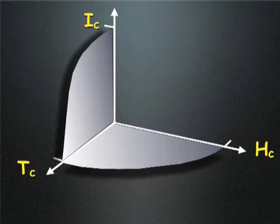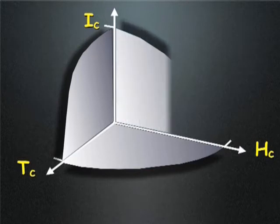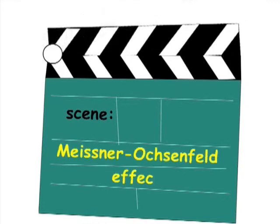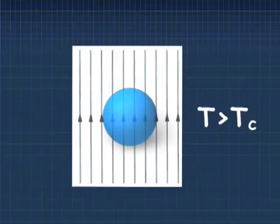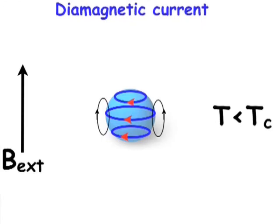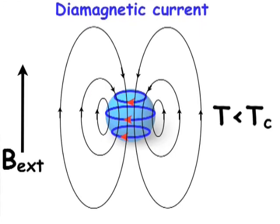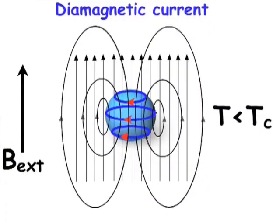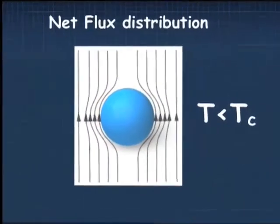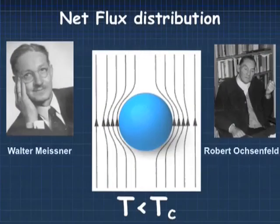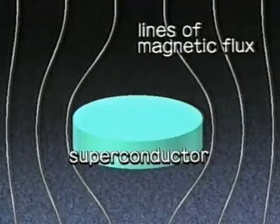In order to understand what controls current density, we really have to start with the basic phenomenology of the superconductor. The very important phenomenon was discovered by Meissner and Ochsenfeld in 1933. It consists in the complete expulsion of the magnetic field from the bulk superconductor. Thus, the existence of the Meissner effect has led to the concept of the penetration depth.